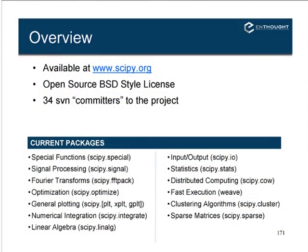SciPy.io provides tools for reading and writing different file formats. There are libraries for reading ASCII columnar data, reading and writing Fortran data, and reading and writing Matrix Market matrices. Matrix Market is a repository of matrices of different shapes and formats that you can use to test your algorithms.